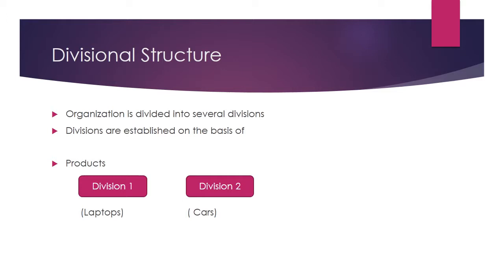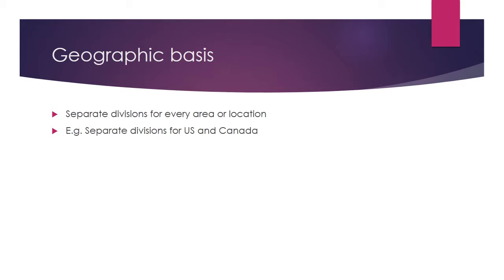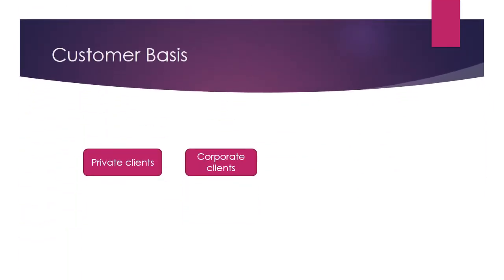For example, division 1 will be dealing with laptops and division 2 will be dealing with cars. Another basis is geographic, where organizations have a separate division for every area or location — for example, a separate division in the US and in Canada. The other basis is customer base, where organizations have separate divisions for dealing with private clients and corporate clients.